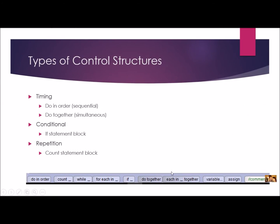There are different types of control structures, which you can find at the bottom of ALICE. One type has to do with timing: do-in-order is sequential, and do-together is simultaneous. In our last chapter, you learned about conditional control structures using the if statement block — used in events and procedures to control which section of code runs. We've also done repetition using the count statement block, and we're going to learn about the while loop later in this chapter.